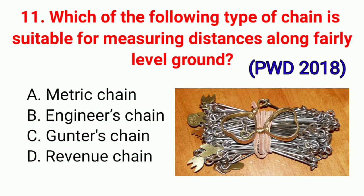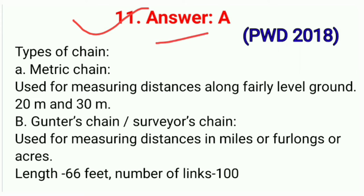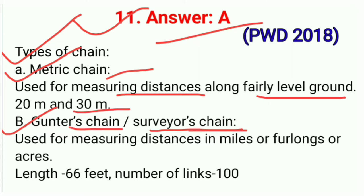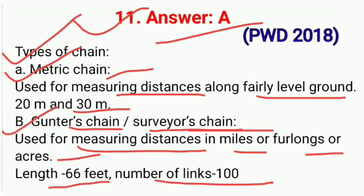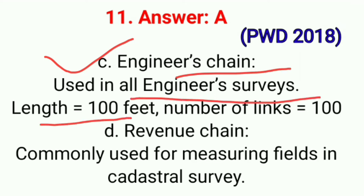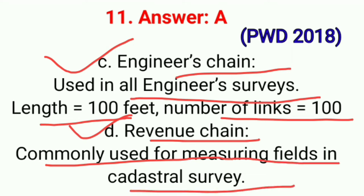Question No. 11. Which of the following type of chain is suitable for measuring distances along fairly level ground? Correct option A: Metric chain. There are four types of chain: first, metric chain — used for measuring distance along fairly level ground, 20 meter and 30 meter; second, Gunter's and surveyor's chain — used for measuring distance in miles, furlongs or acres, length 66 feet, 100 links; third, engineer's chain — used in all engineer's surveys, length 100 feet, 100 links; fourth, revenue chain — commonly used for measuring fields in cadastral surveys. Correct option A.